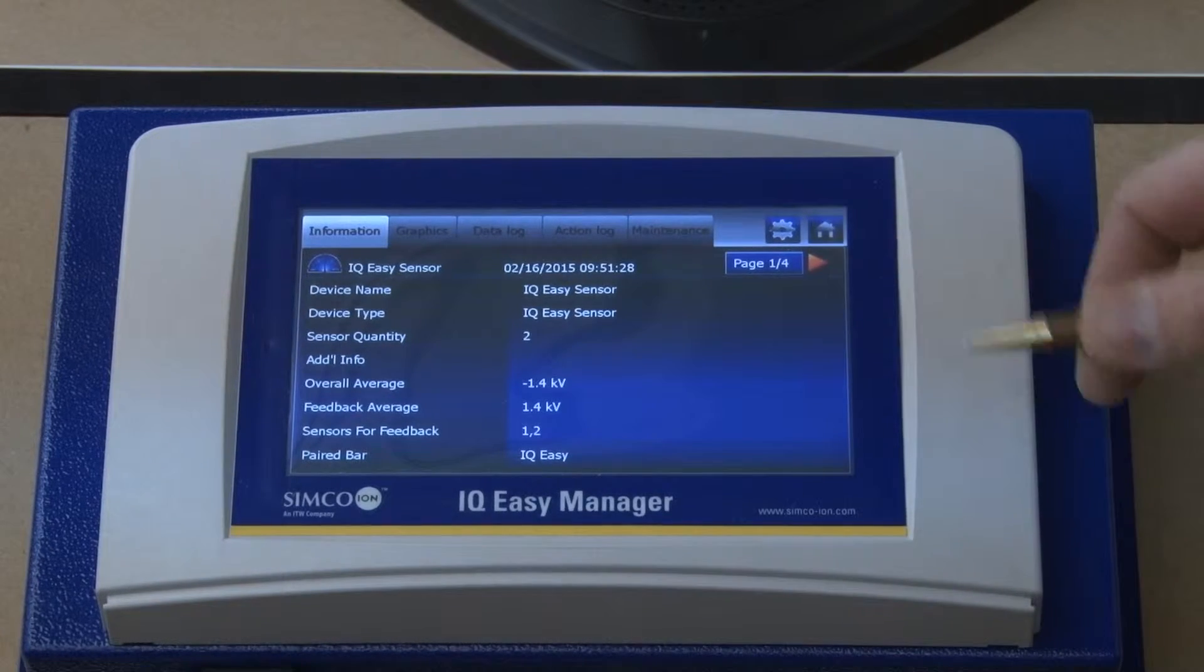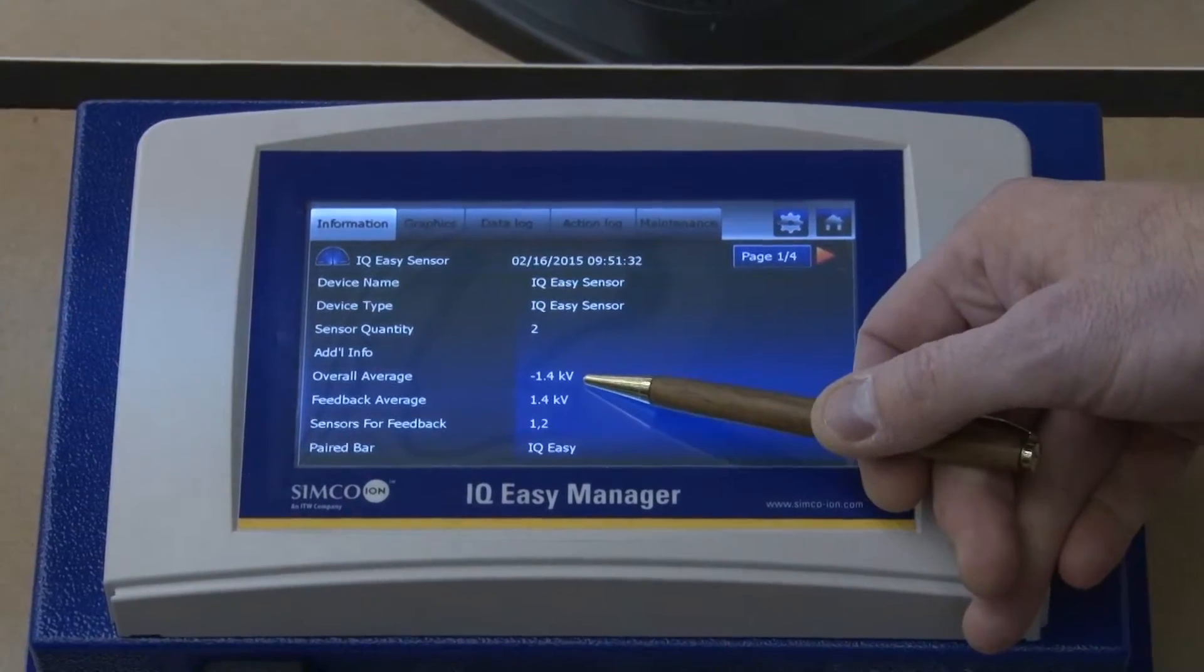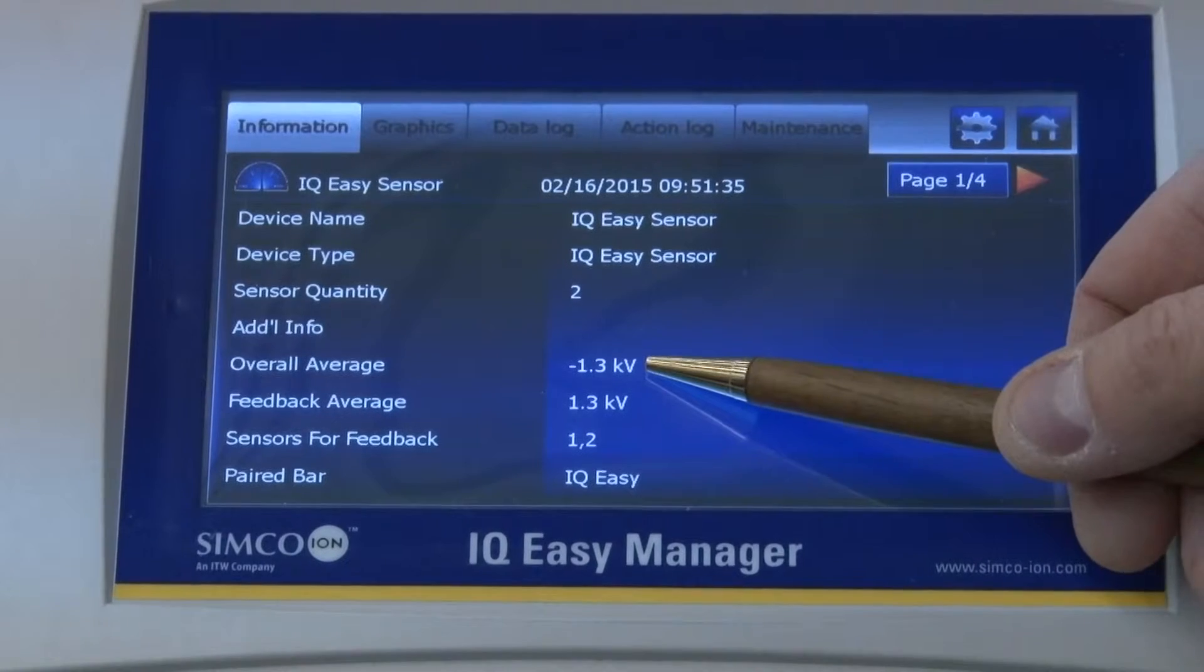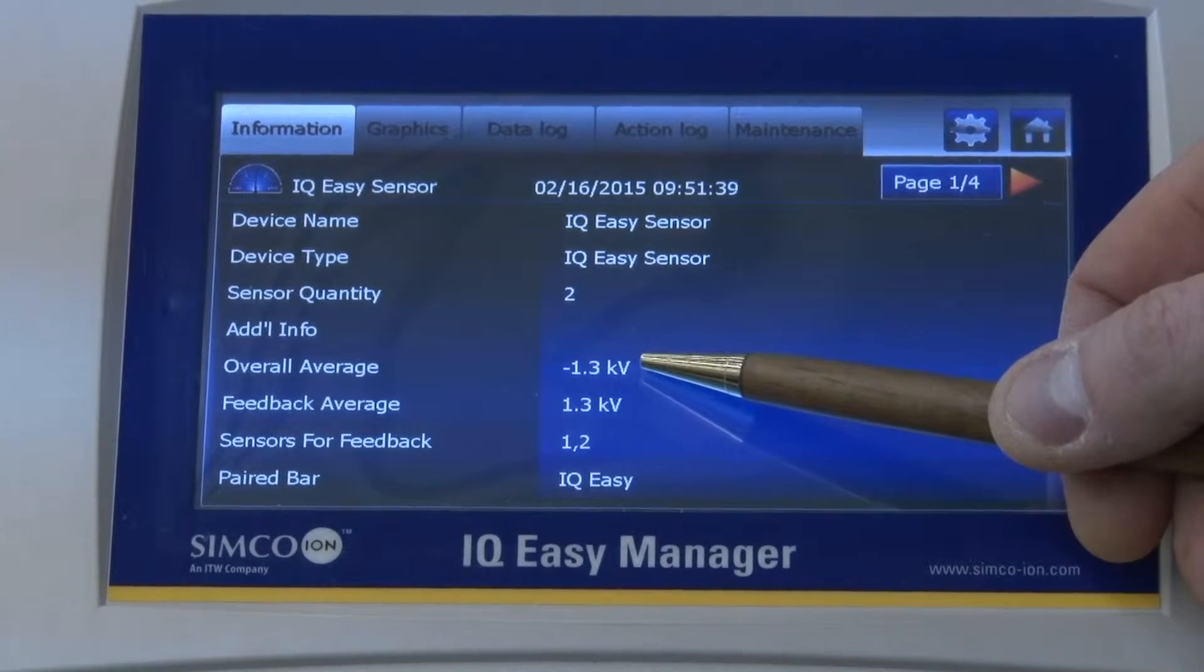As the sensor bar runs, we should see this number here, which is our overall average and feedback average, we should see that number drive its way down to zero.